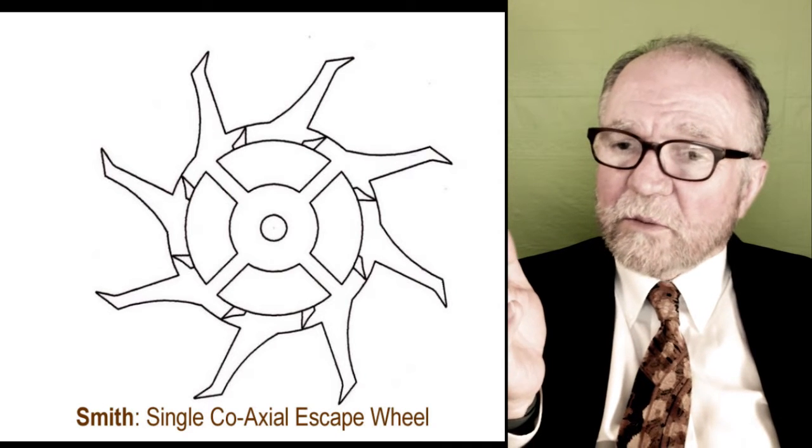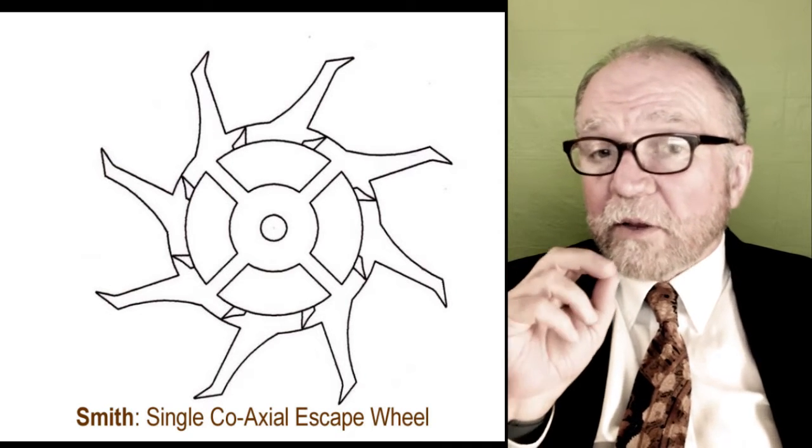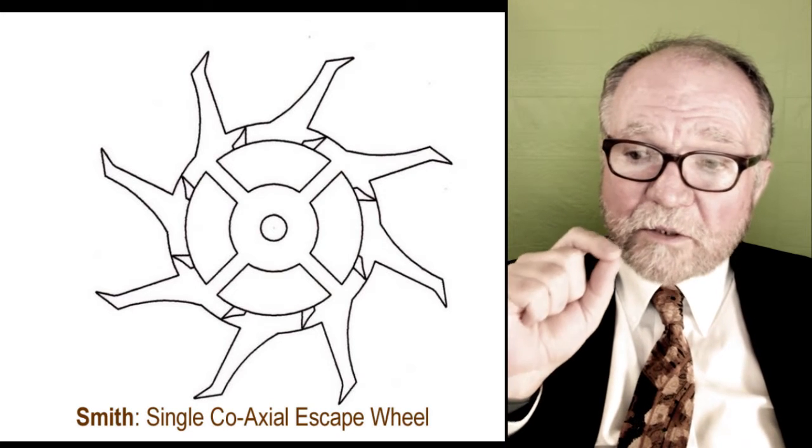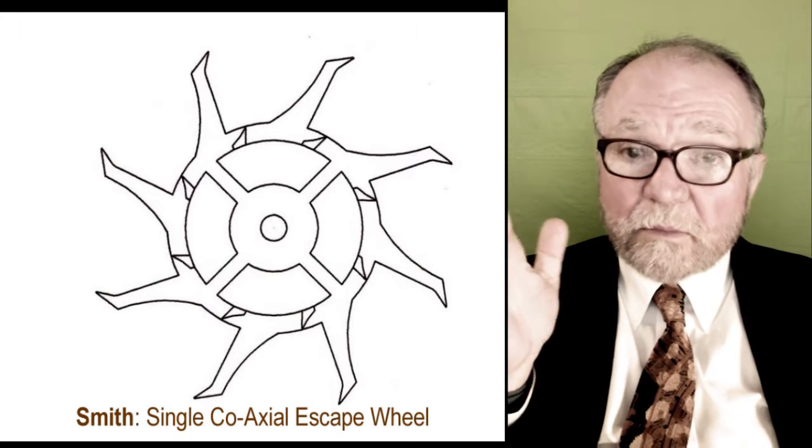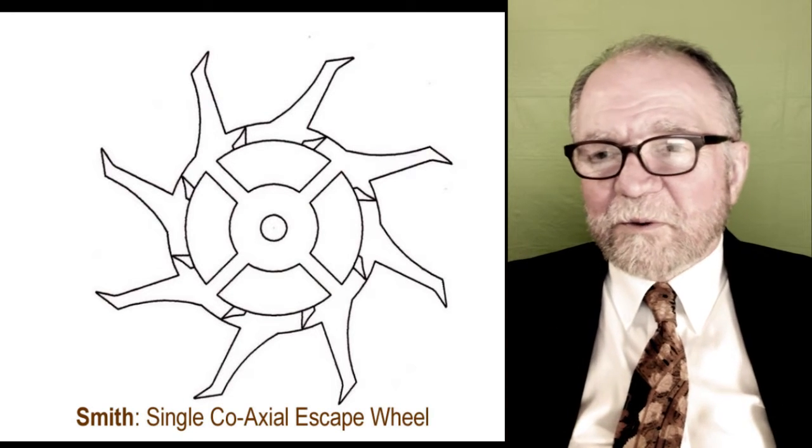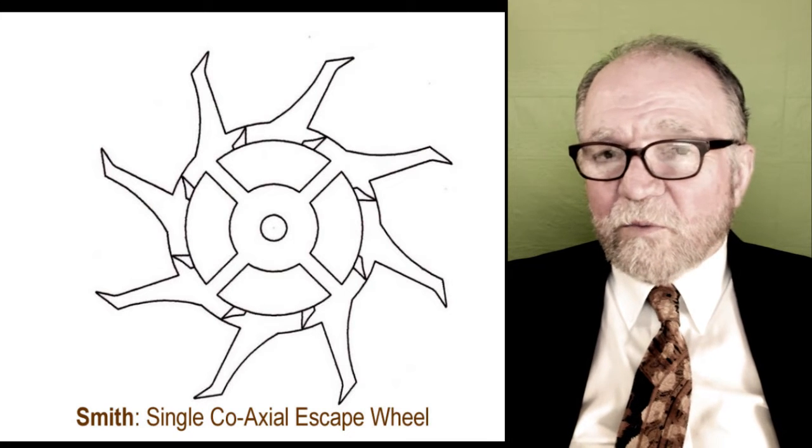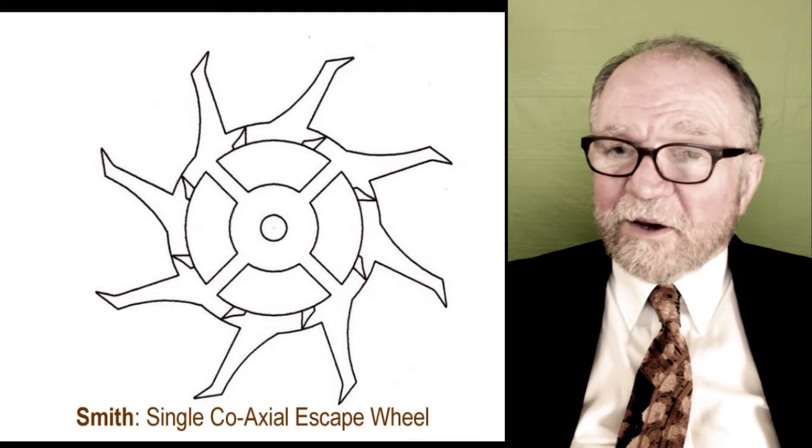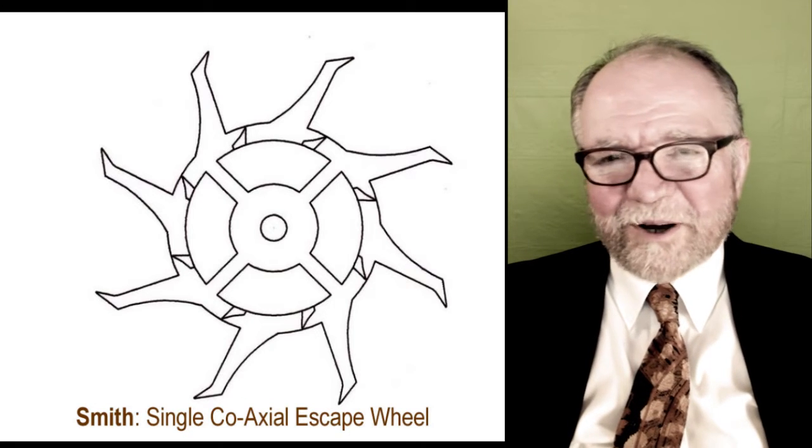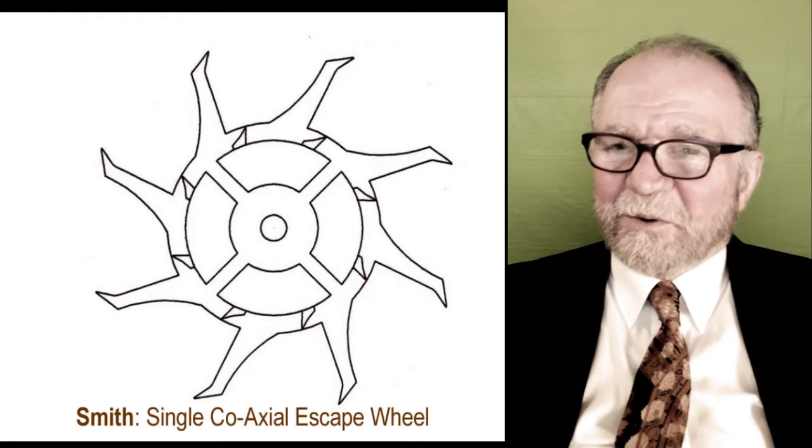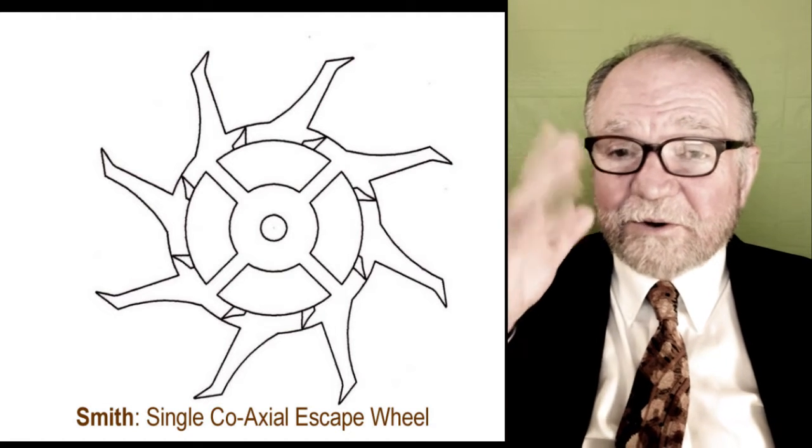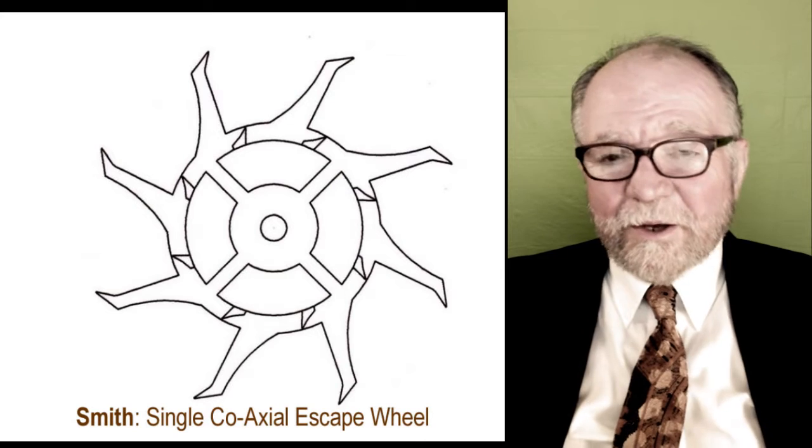He made the wheel smaller and combined two wheels into one, still giving the coaxial movement, but it made it lighter. He found out that if the coaxial escape wheel was lighter, the watch worked better. This was the epitome of what can be done with a good coaxial movement. Unfortunately, Smith's watches are very, very dear, like in the $100,000 neighborhood.